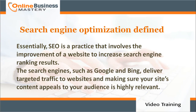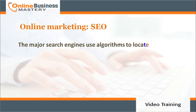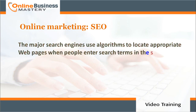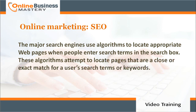Online marketing and SEO: the major search engines use algorithms to locate appropriate web pages when people enter search terms in the search box. These algorithms attempt to locate pages that are close or exact matches for users' search terms or keywords.